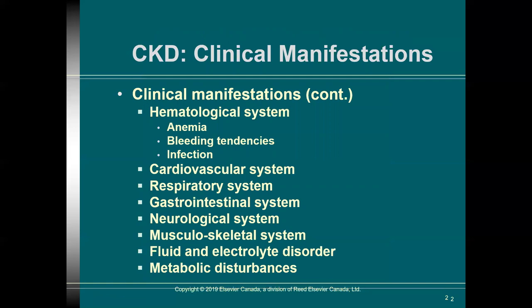Now let's talk about the clinical manifestations of CKD — chronic kidney disease. We went through the whole picture on the previous slide, but just a couple of key points: as renal function deteriorates and becomes progressively worse, we see various functions lost — excretory functions, regulatory functions, and endocrine functions. This loss of function is manifested in every single system. No matter what the underlying cause of CKD is, we see this loss of function that affects the entire body.